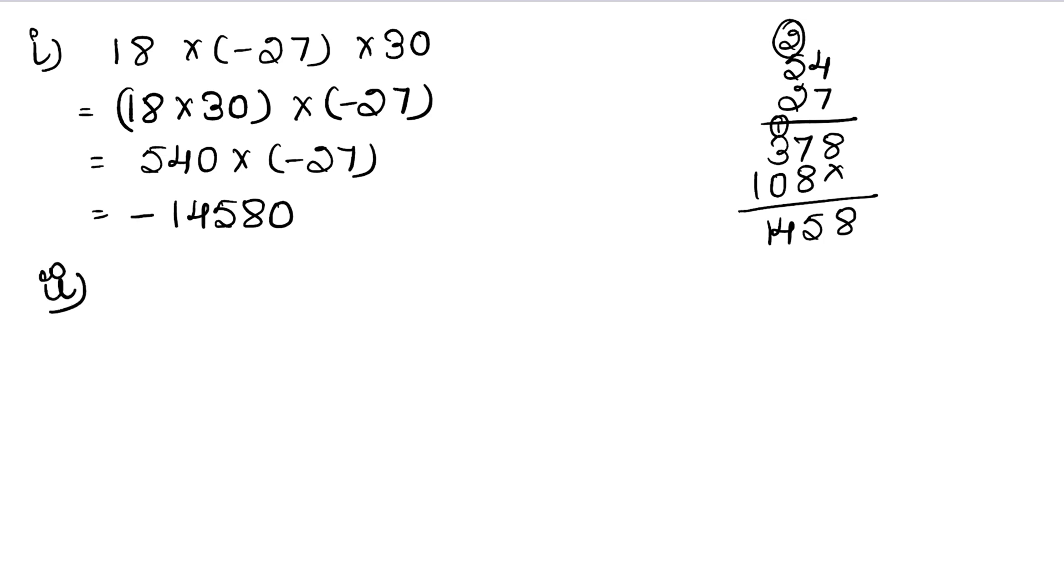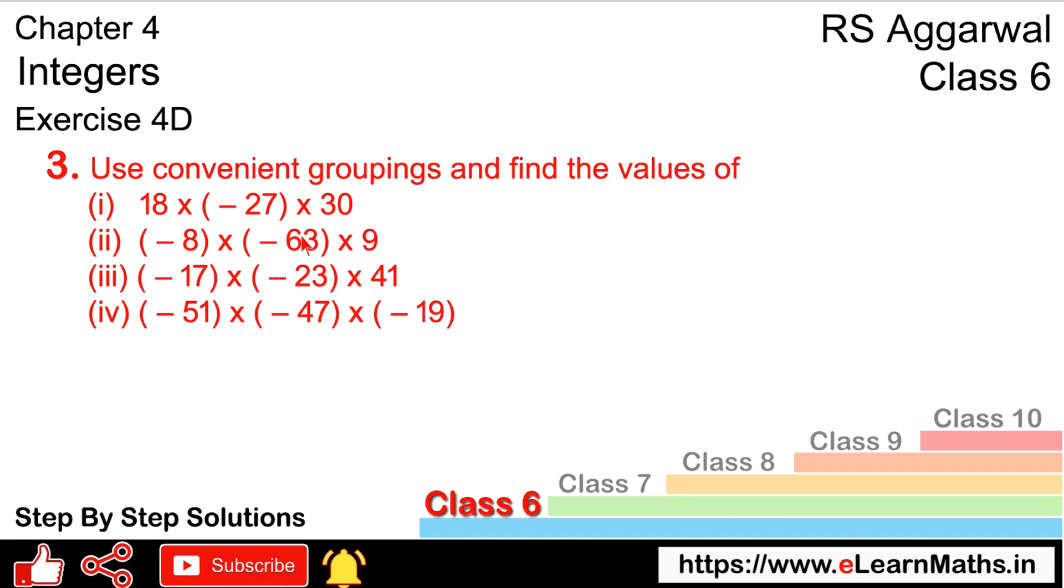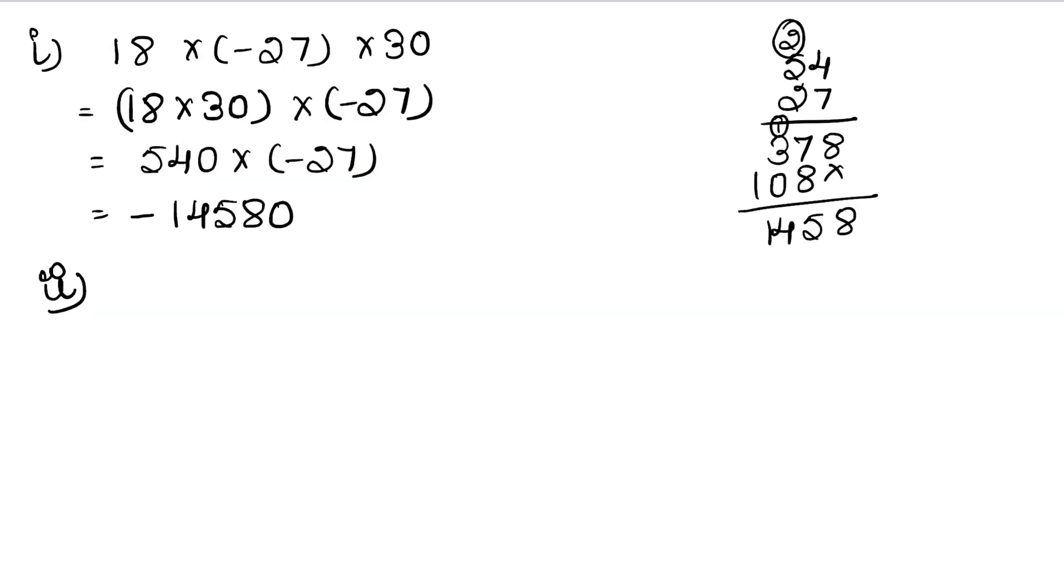Second part: (-8) × (-63) × 9. We have two minus terms, so first we take these together. (-8) × (-63): minus minus equals plus. Now 63 × 8: 8×3 is 24 carry 2, 8×6 is 48, 49, 50. This equals 504.